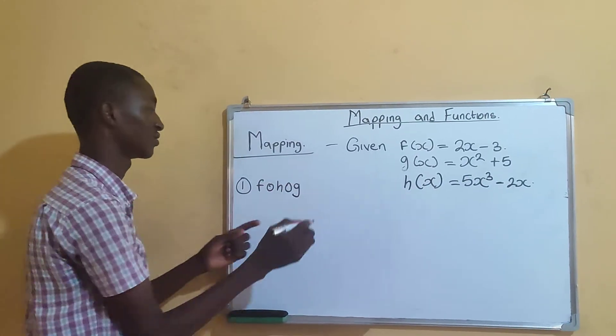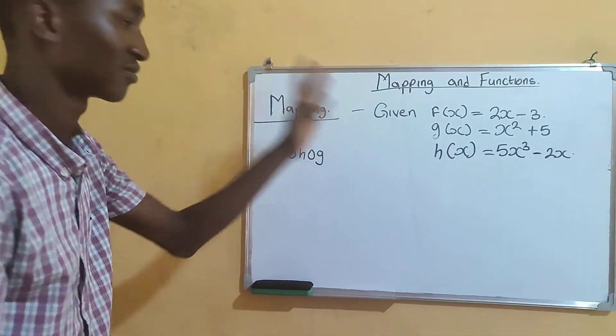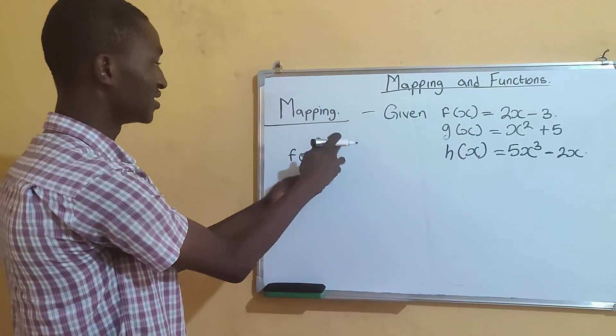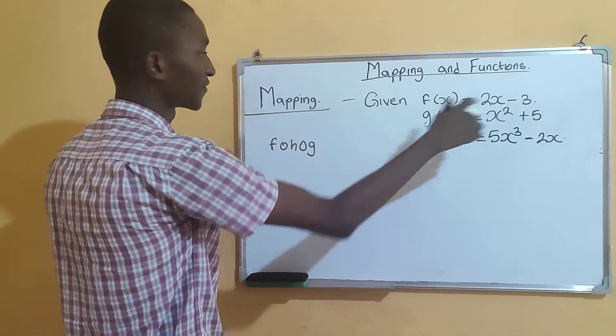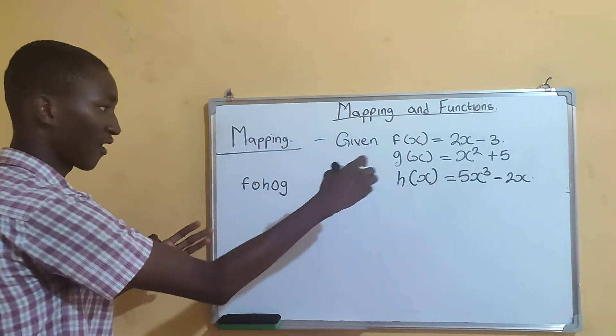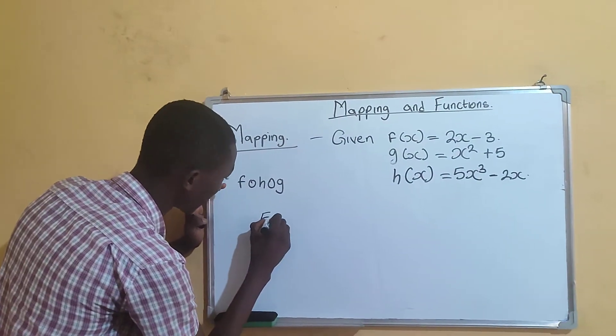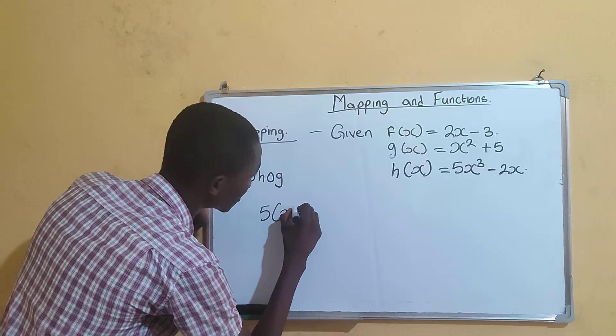Now you start from the right-hand side. You put g into h, then you put the whole function into f. Starting from g: g is x squared plus 5. Put it into h. Our function h is 5 into x cubed. Our x cubed is x squared plus 5 raised to the power 3, minus 2 into - replace with the same thing - x squared plus 5.